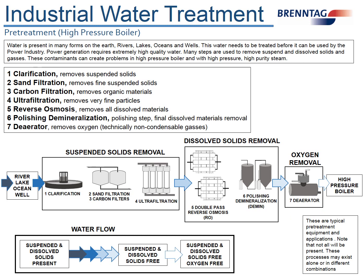This chart gives a basic understanding of the flow of water through high-pressure pre-treatment. We'll briefly go through clarification, sand filtration, carbon filtration, ultra-filtration, reverse osmosis, polishing demins, and de-aeration.